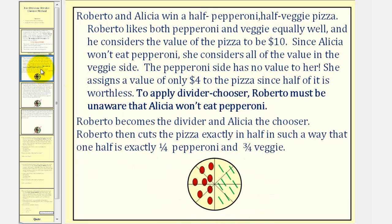As an example, let's assume Roberto and Alicia win a half-pepperoni, half-veggie pizza. Roberto likes both pepperoni and veggie equally and considers the total value of the pizza to be ten dollars. But since Alicia won't eat pepperoni, she considers all the value to be on the veggie side — the pepperoni side has no value to her. She assigns a total value of only four dollars to the pizza since half of it is worthless to her.